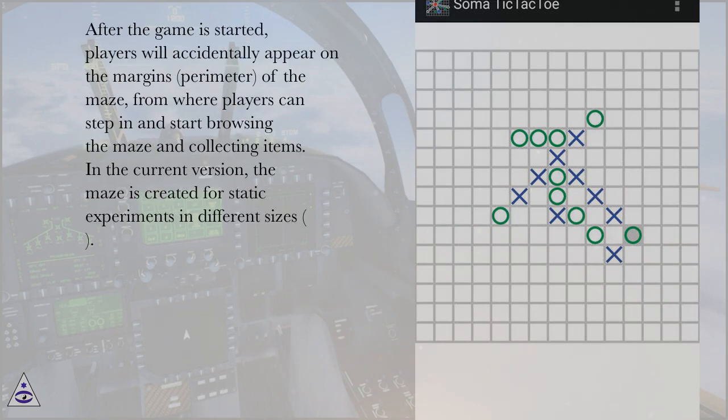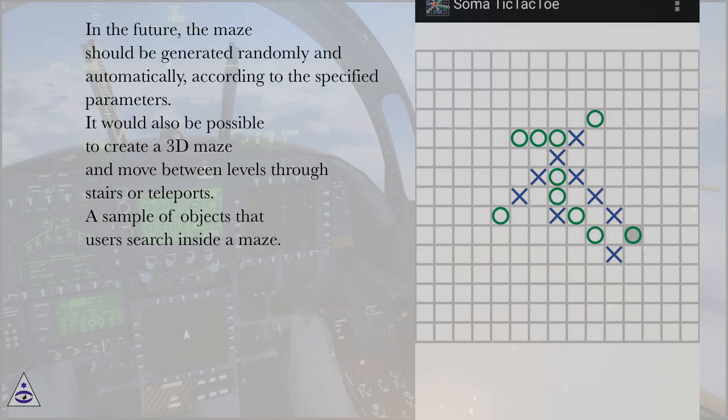After the game is started, players will accidentally appear on the margins, perimeter of the maze, from where players can step in and start browsing the maze and collecting items. In the current version, the maze is created for static experiments in different sizes. In the future, the maze should be generated randomly and automatically, according to the specified parameters. It would also be possible to create a 3D maze and move between levels through stairs or teleports.